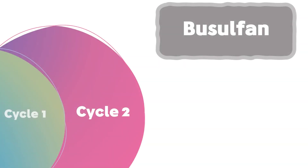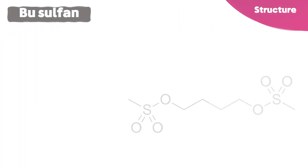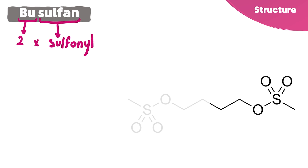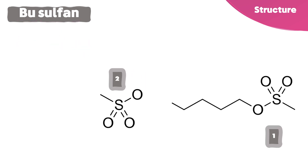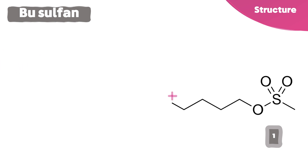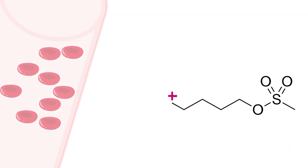Let's move to the second level. What is the structure of Busulfan? From its name, 'BU' in Busulfan stands for 2 and 'sulfan' stands for sulfonyl. Each functional group can leave the compound, leading to the alkylation of nearby nucleophiles.